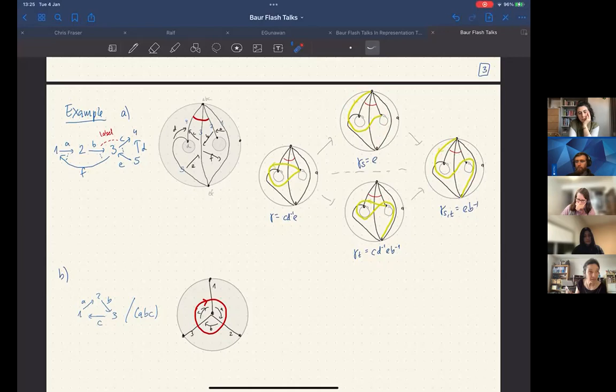And the new feature is that you have to allow punctures, because if you have these longer relations, this is going to be modeled by a puncture, and then you need a label to make it finite dimensional.